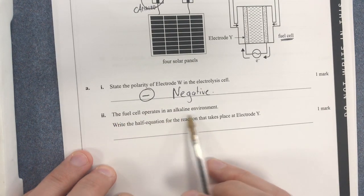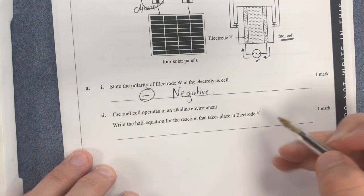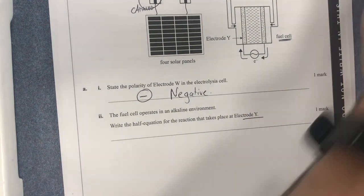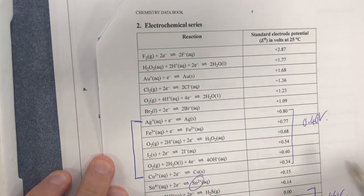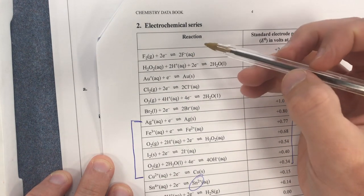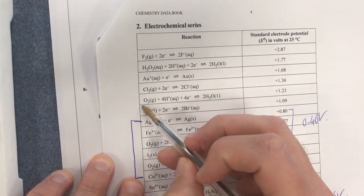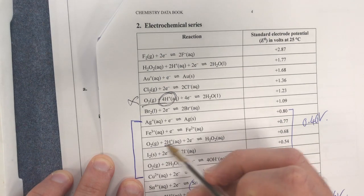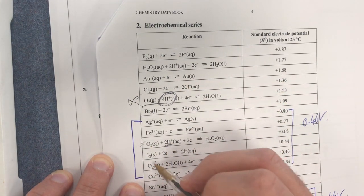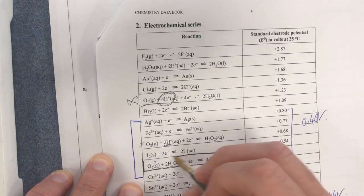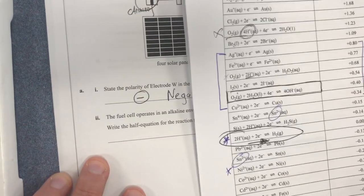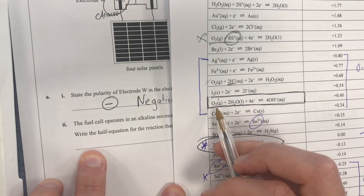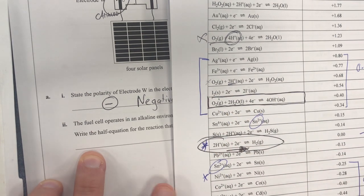Fuel cell operates in an alkaline environment. So write the half equation for the reaction that occurs at Y. So what's happening at Y? We have our oxygen reaction in our fuel cell. So therefore I'd go over here and take my fuel cell with oxygen. So I look for oxygen. We have this guy here. That would only occur in acidic environments, so I can't use that one. Oxygen here, also acidic environments, can't use that one. Oxygen here. So we're only taking this reaction here. And that's going to be our answer for what's happening at electrode Y.